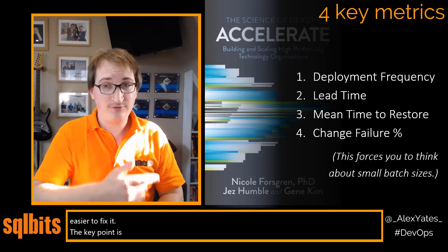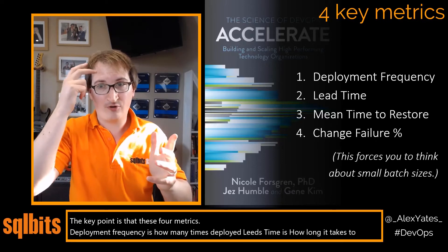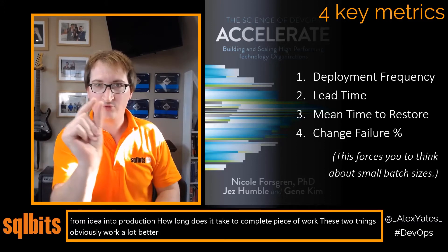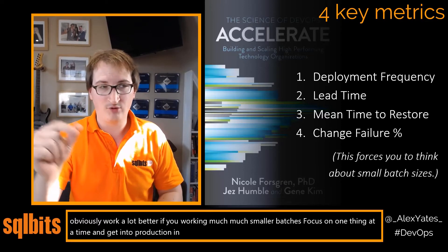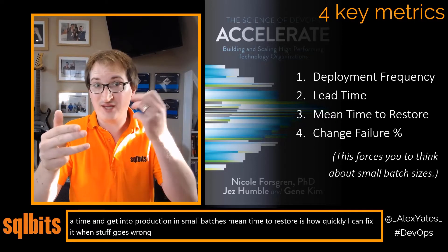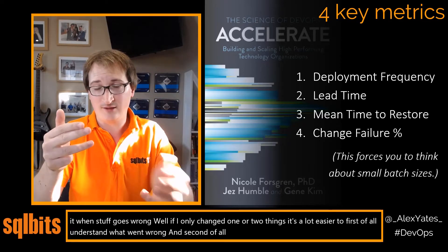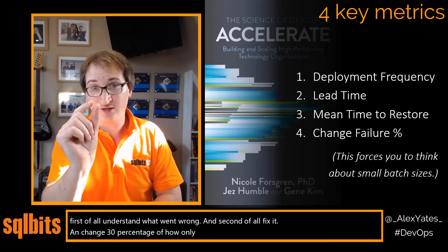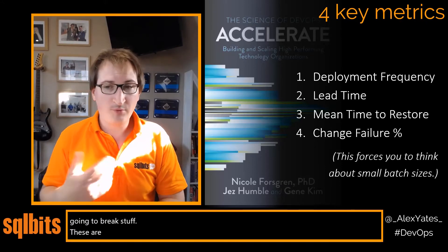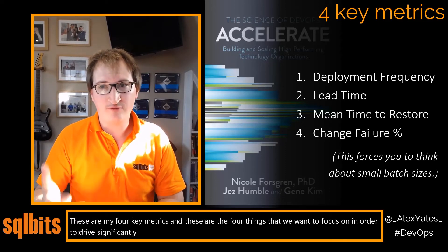The four key metrics: deployment frequency is how many times a day you deploy; lead time is how long it takes to get from idea into production. These work better when you work in much smaller batches, focus on one thing at a time, and get it into production. Mean time to restore is how quickly you can fix things when they go wrong — if you've only changed one or two things, it's much easier to understand what went wrong and fix it. Change failure percentage: if you're only making a small number of changes, you're unlikely to break things. These are the four things we want to focus on to drive significantly more effective IT performance.